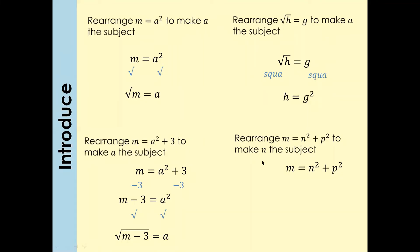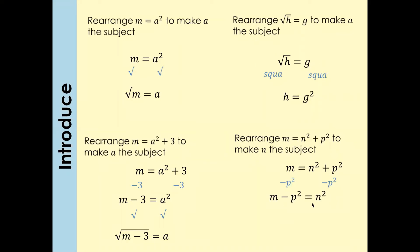We want to make n the subject. First move p squared to the other side — minus p squared on both sides — so m minus p squared equals n squared. Now to get rid of the square, take the square root of both sides: n equals the square root of (m minus p squared).